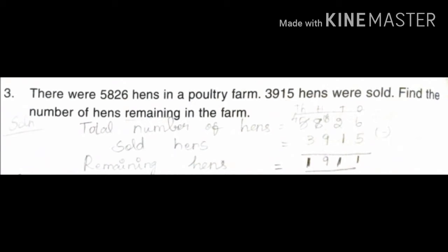The second step: sold cans is 3,915. First, total number of cans; next, sold cans. Then write the place value: 6 means ones, 2 means tens, 8 means hundreds, 5 means thousands. To find the remaining, we subtract — put the symbol of subtraction.